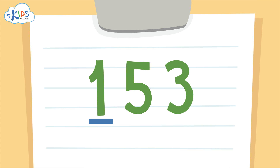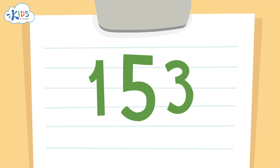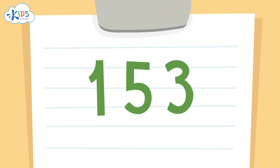If you want to round a number to the nearest hundred, you actually have to look at the tens place to help you decide whether to round up or round down. I like to underline the place I'm rounding to — the hundreds place — and draw an arrow to the place that will tell me whether to round up or round down: the tens place. You always look one place to the right of the place that you want to round to.